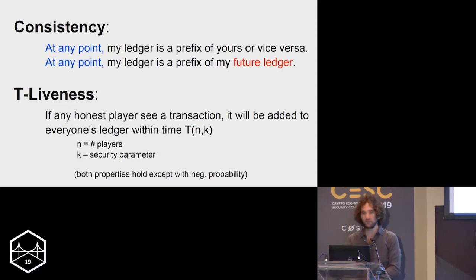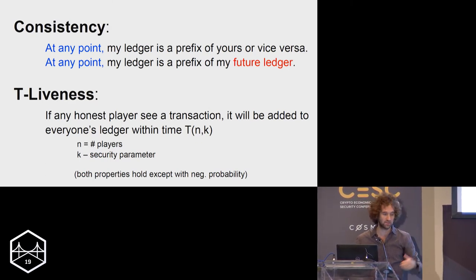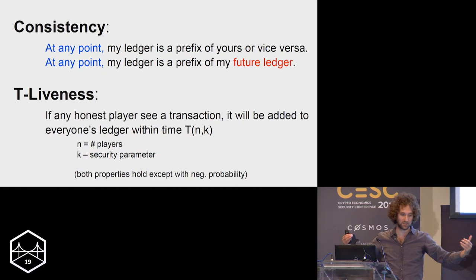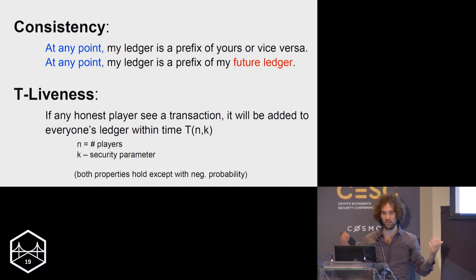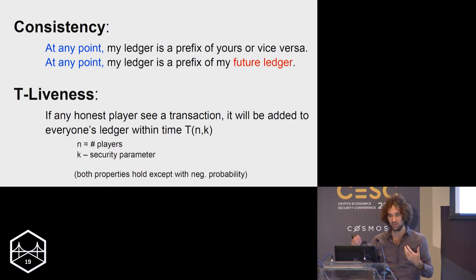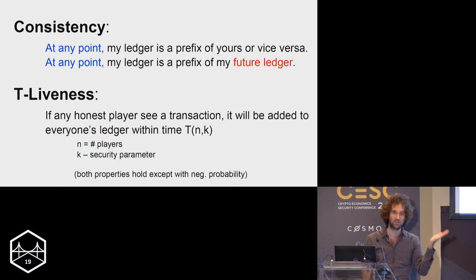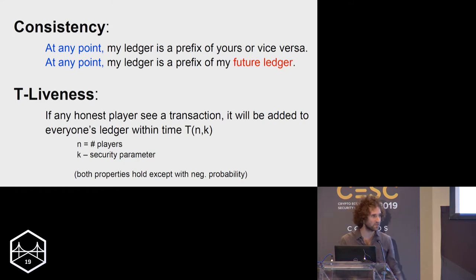A bit more precisely, the consistency property consists of two things, and it's quite important to have both. The first is that at any point in the interaction, if we look at two nodes, we require that either my ledger is a prefix of yours or vice versa — potentially I received a transaction you haven't seen yet, but you will receive it shortly. The second property is that I should agree with myself in the future: whatever I have in my ledger now should remain there. This is sometimes called future self-consistency.